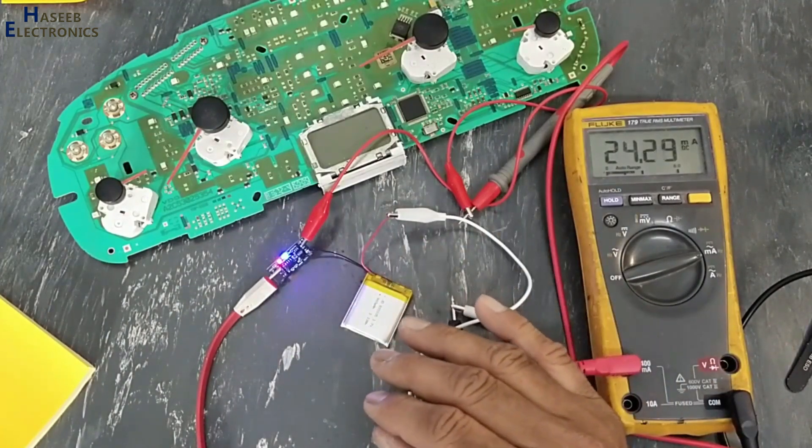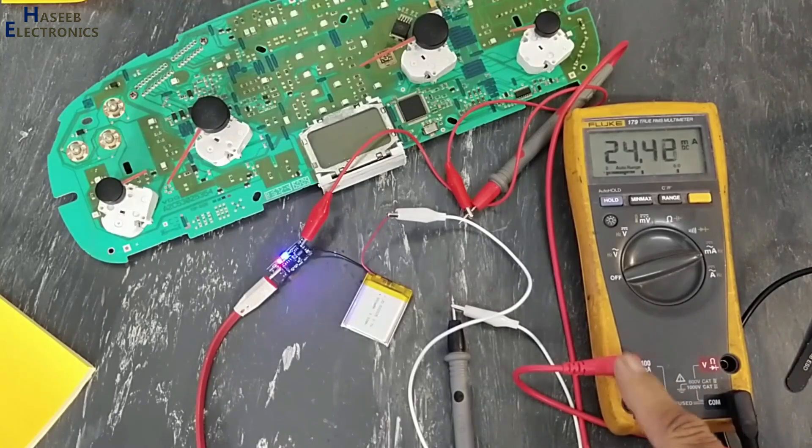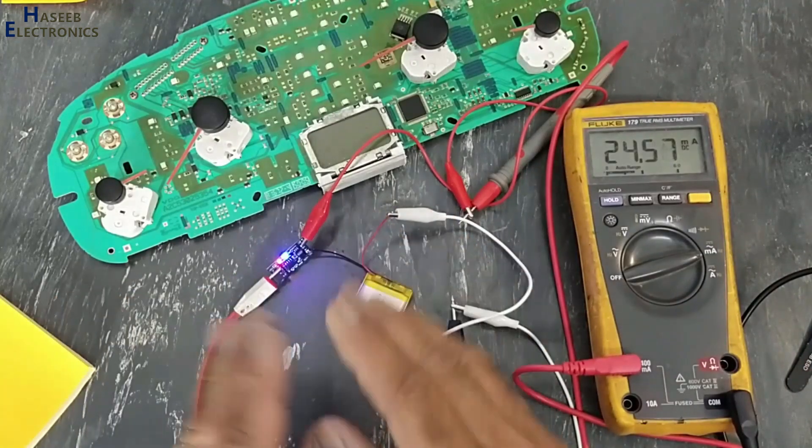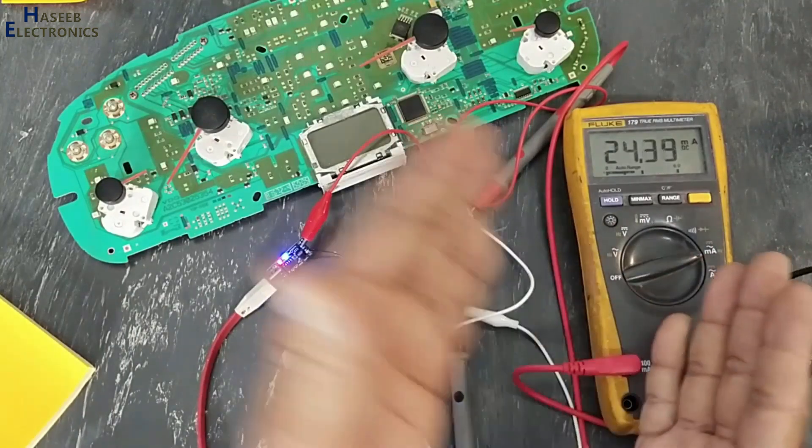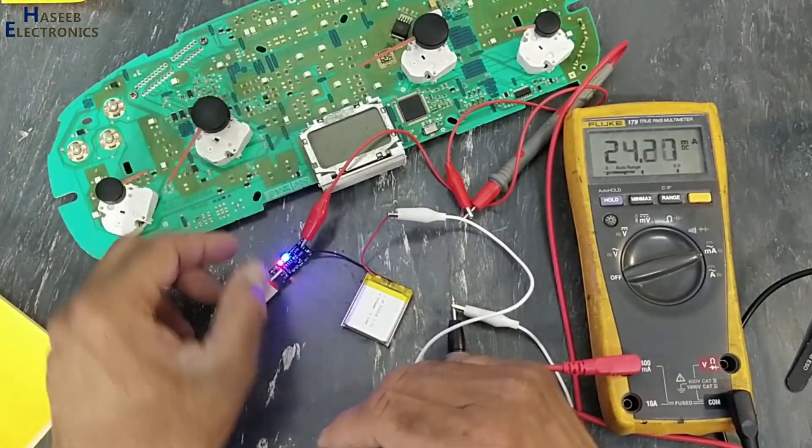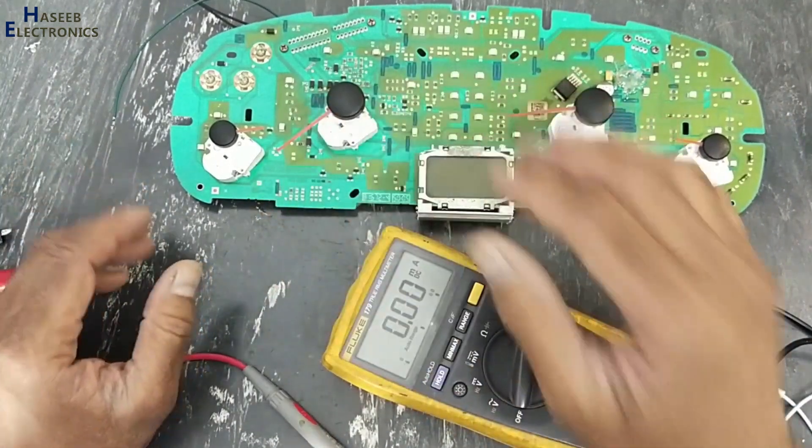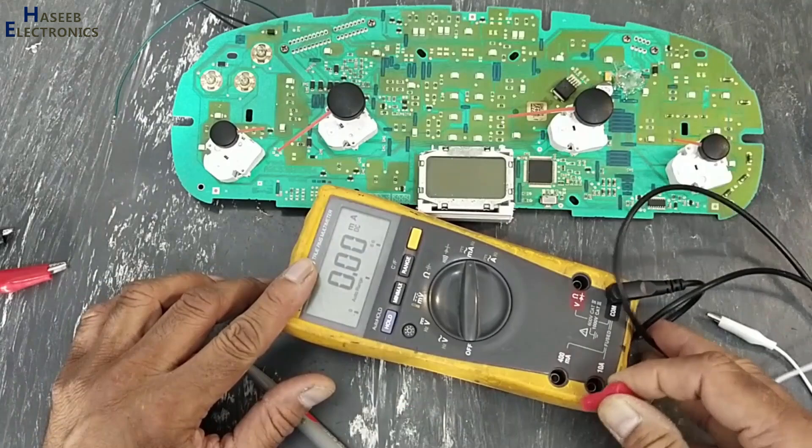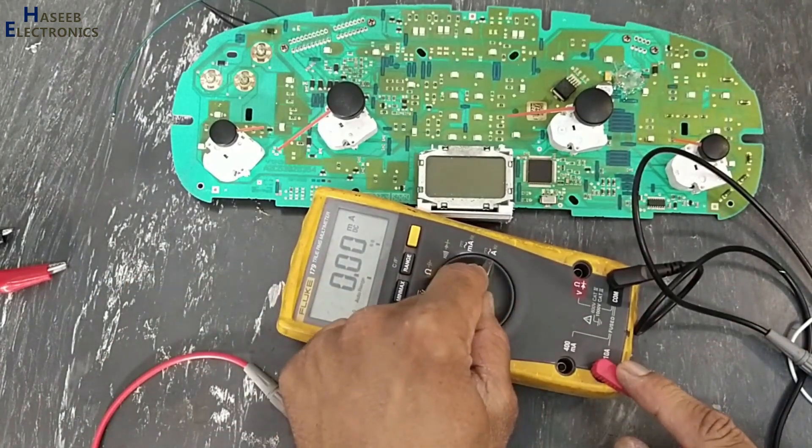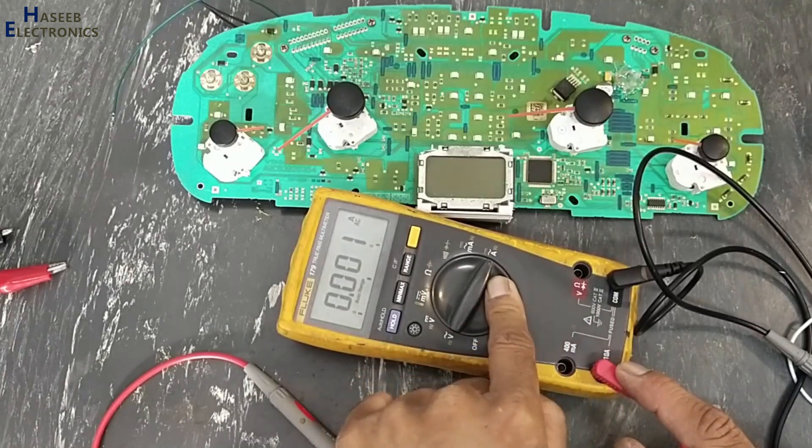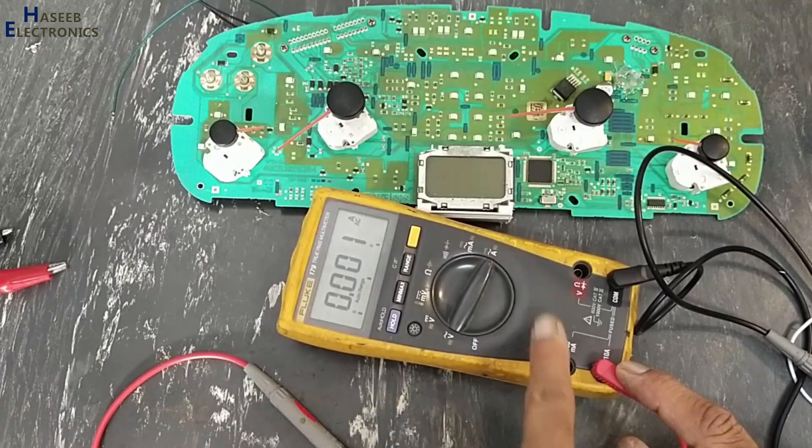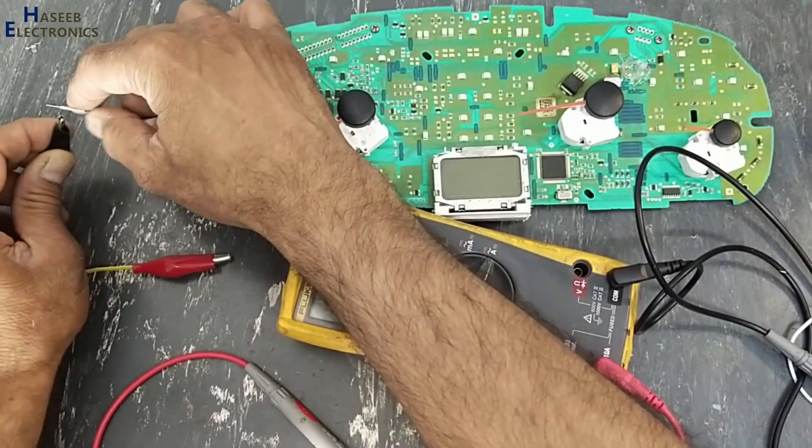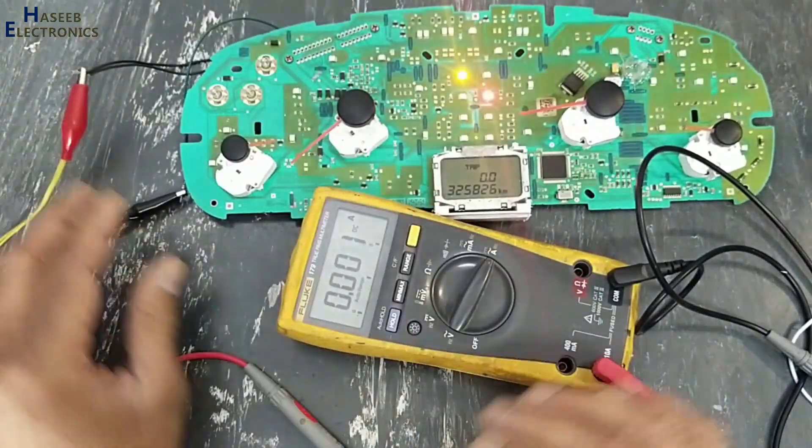When we finish this measurement and we don't know what is the input current, for safety purpose first we will use 10 ampere socket, the highest range. And we will select that specific range 10 ampere. This is milliampere, this is ampere. Ampere for this, milliampere for this socket. 10 ampere DC. First we will connect power to this circuit. Now the circuit is on.